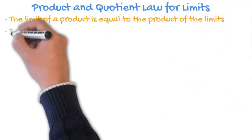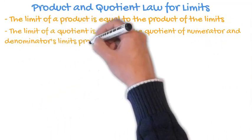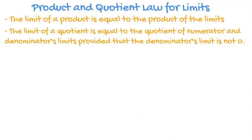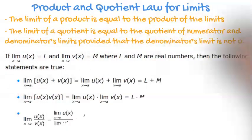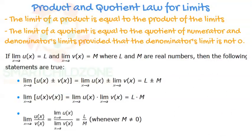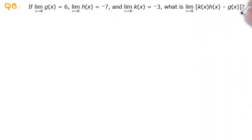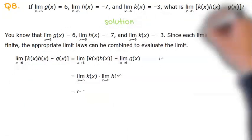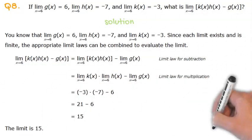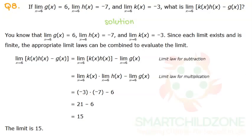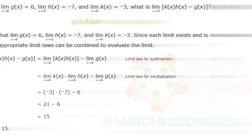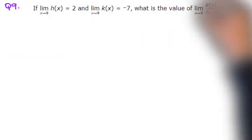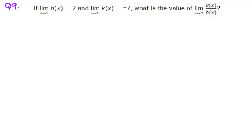The limit of a product is equal to the product of the limits, and the limit of a quotient is equal to the quotient of the numerator and denominator's limits, provided that the denominator's limit is not zero. If the limits of g(x), h(x), and k(x) are given, what is k(x) times h(x) minus g(x)? If the limit of h(x) equals two and the limit of k(x) equals minus seven, what is k(x) divided by h(x)?